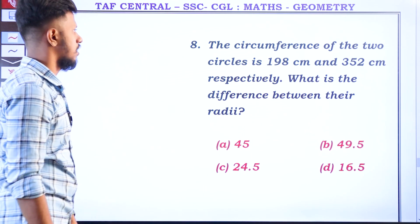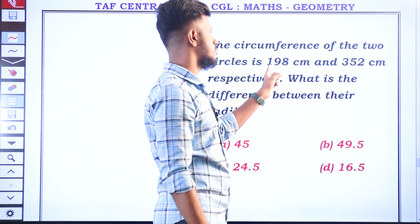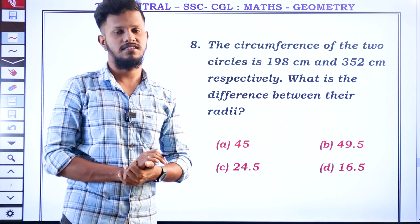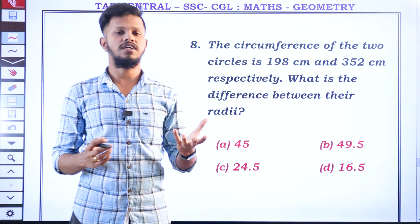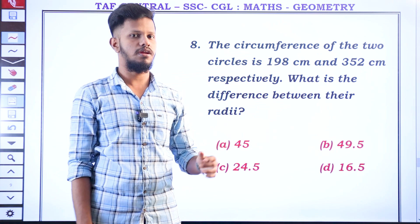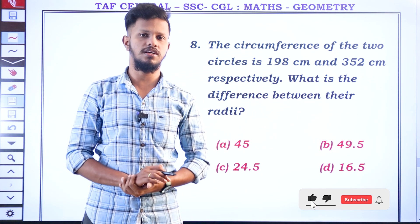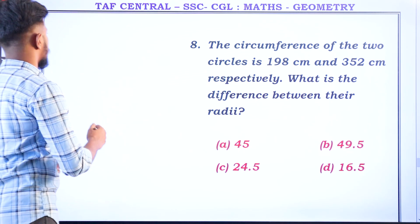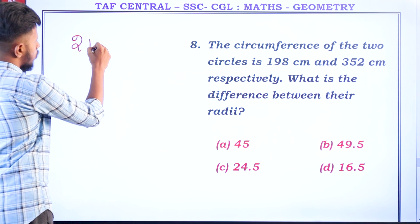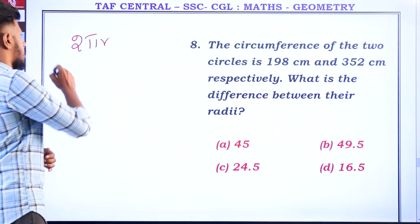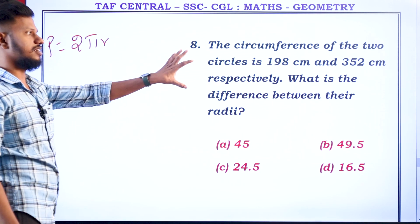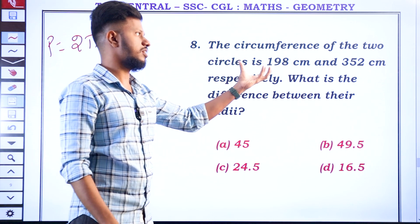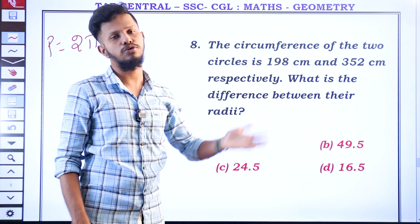Let's take a look. The circumference of the two circles is 152cm respectively. What is the difference between their radii? One circle is 152cm and another circle is 152cm. Now, what is the formula? 2πr.